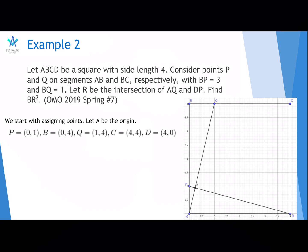We put it on the coordinate plane already. First, let A be the origin, because why not? Then, let P equals (0, 1). It could be (1, 0) either. B equals (0, 4). Q equals (1, 4). C equals (4, 4). And D equals (4, 0).